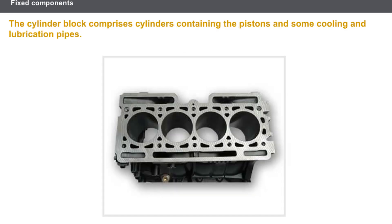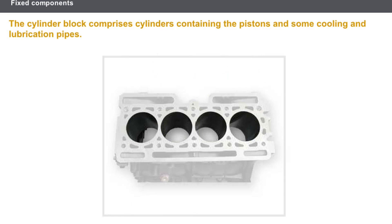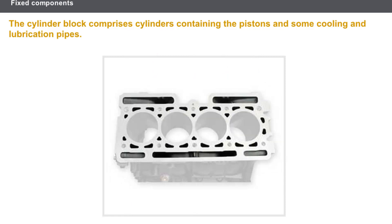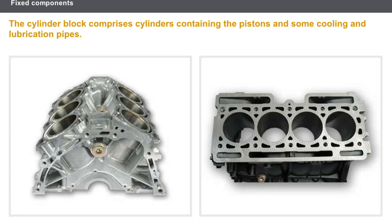Now let's look at the cylinder block in more detail. The role of the cylinder block is to withstand the combustion of the gases and to evacuate the heat. The cylinder block consists of the cylinders containing the pistons and the cooling and lubrication pipes which evacuate the heat and lubricate the moving components. The cylinder block was previously swaged or lined, but today it is machined. It is usually made from cast iron, but sometimes a light alloy.